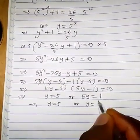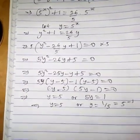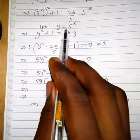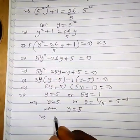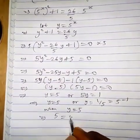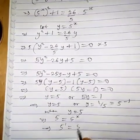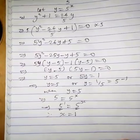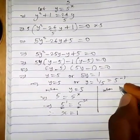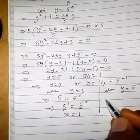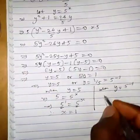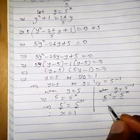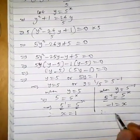This implies y equals 5 or, dividing by 5, y equals 1 over 5, which can also be written as 5 raised to the power minus 1. When y equals 5, we plug it in: 5 raised to the power s equals 5 raised to the power 1, so s equals 1 since the bases are the same. When y equals 5 raised to the power minus 1, we have 5 raised to the power s equals 5 raised to the power minus 1, so since the bases are the same, s equals minus 1.